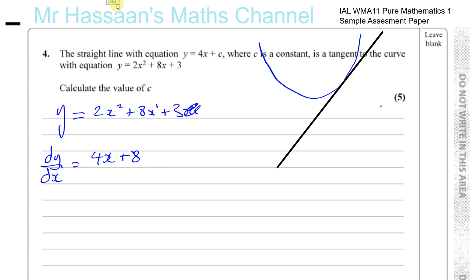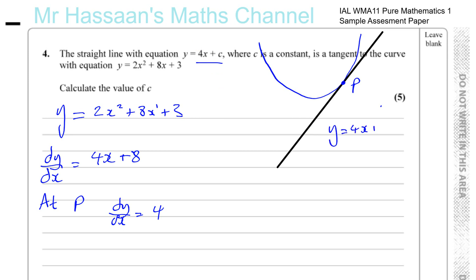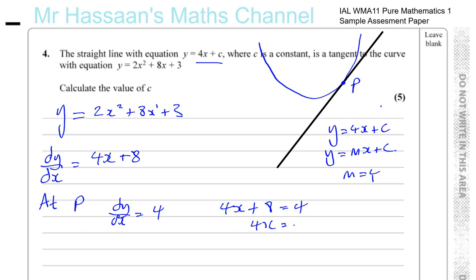At the point P where the tangent meets the curve, the gradient of the curve must equal the gradient of the line, which is 4. So we set dy/dx equal to 4: 4x plus 8 equals 4, giving 4x equals minus 4, so x equals minus 1.